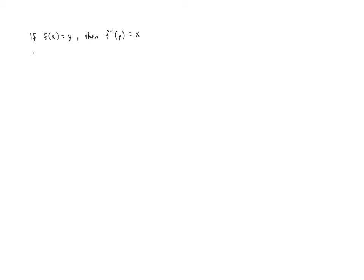So if we look at the graph of our function f, it's going to include the point x comma y, because when x is an input, we know that it outputs y. But what happens if we look at the graph of f inverse? Well, in this case, we know that y is the input and x is the output.